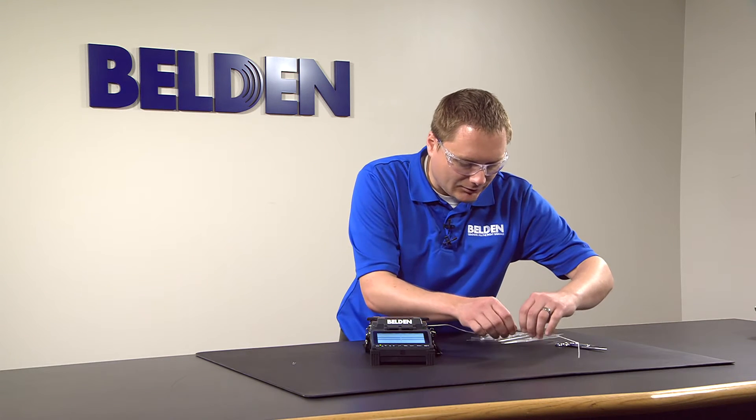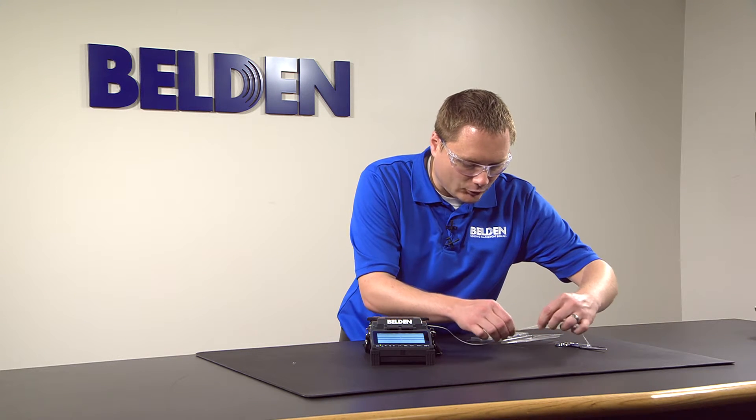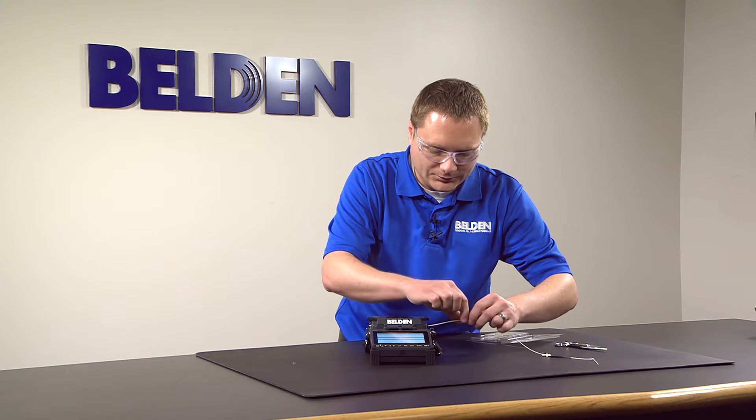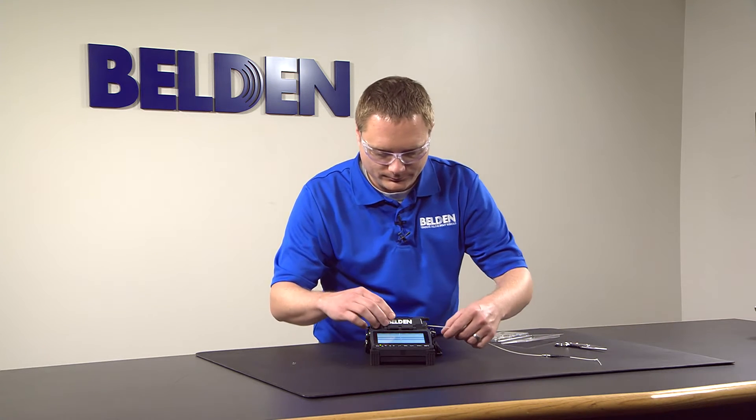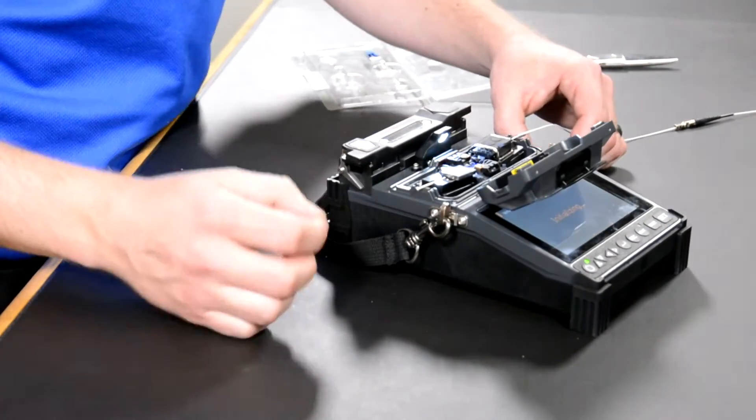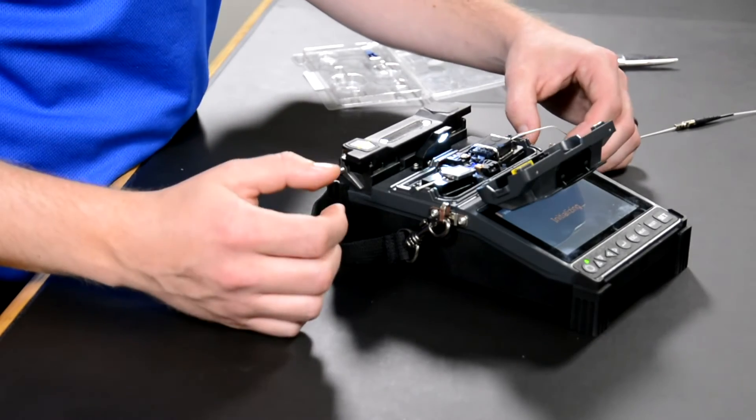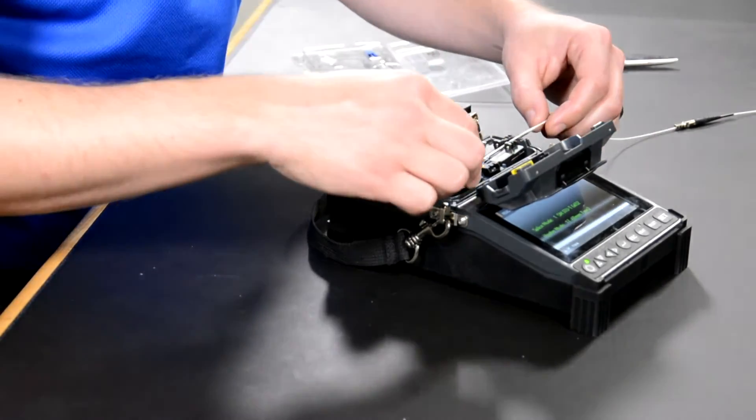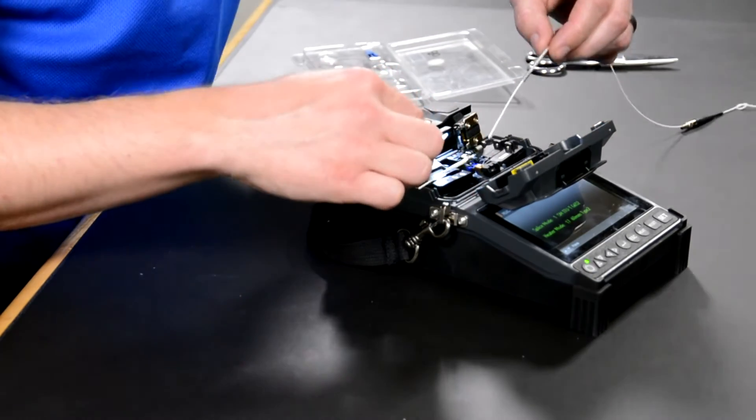I'll slide up the heat shrink tube as well as the spring so that it's close to the splice. Open up the wind cover. Now the splicer will return the holders to their previous positions.